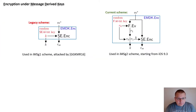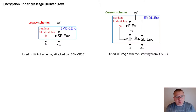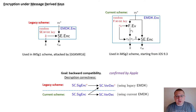Recall from the start of the presentation that the iMessage scheme was changed in response to the 2016 attack by Garman, Green, Kaptychuk, Myers, and Rushanan. The initial EMDK scheme used prior to 2016 simply generated a uniformly random key independently of the plaintext message. It was then replaced in iOS version 9.3 with a more sophisticated scheme where the key depends on the plaintext. This might raise the question of why Apple did not replace the entire scheme with a more standard signcryption construction. The answer is that it was necessary to preserve backwards compatibility, which Apple confirmed in a conversation with us, meaning messages sent by the current version must be decryptable by the old version.